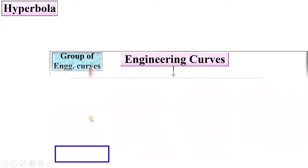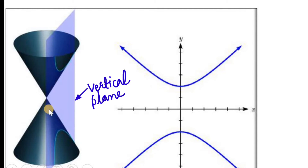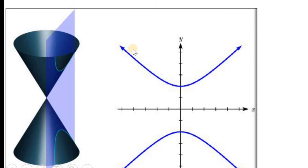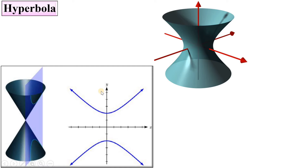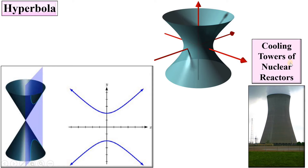Next is the hyperbola. Here you can see that if the cone is cut by a vertical plane then you will get the hyperbola on both sides. I have shown it on both sides and the hyperbola is highlighted in blue color. This is the hyperbola, and you can see here the cooling towers of a nuclear reactor — this shape is a hyperbolic shape.